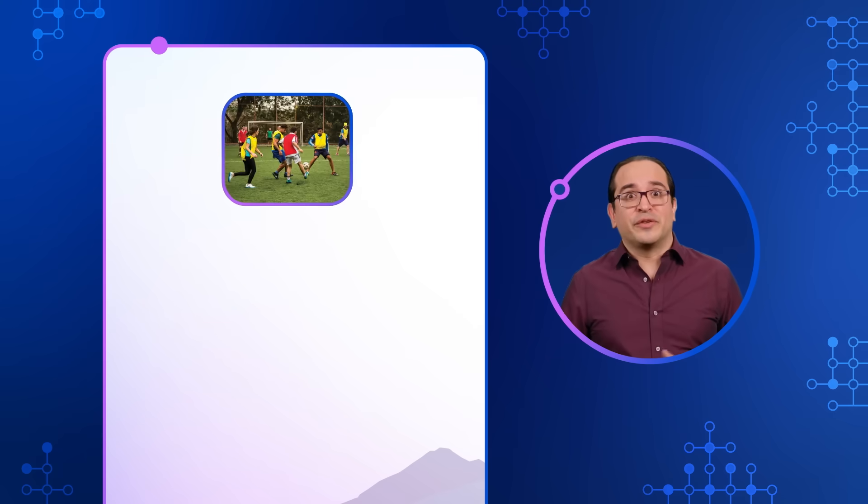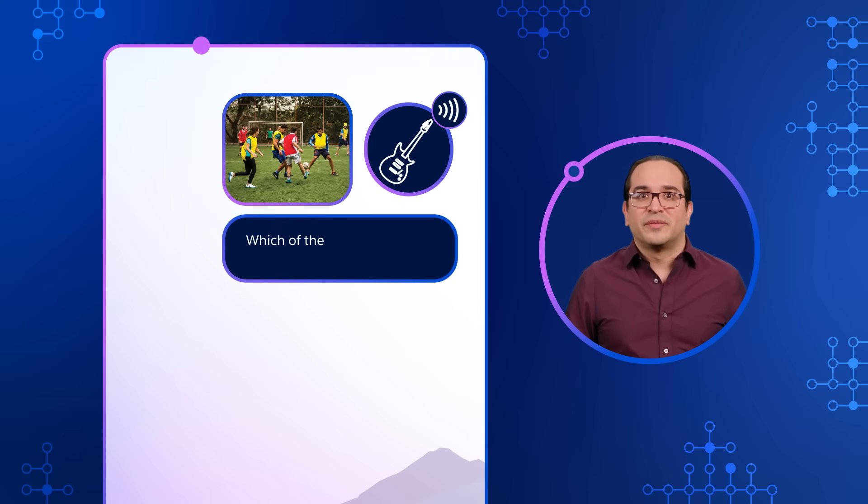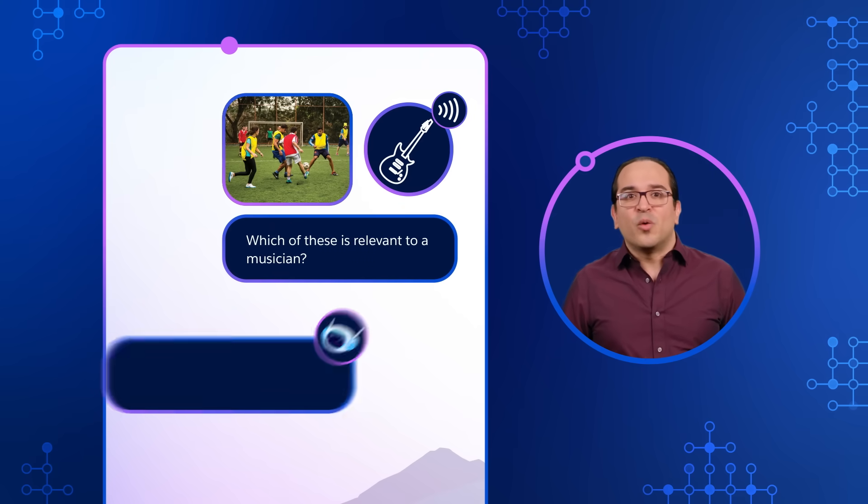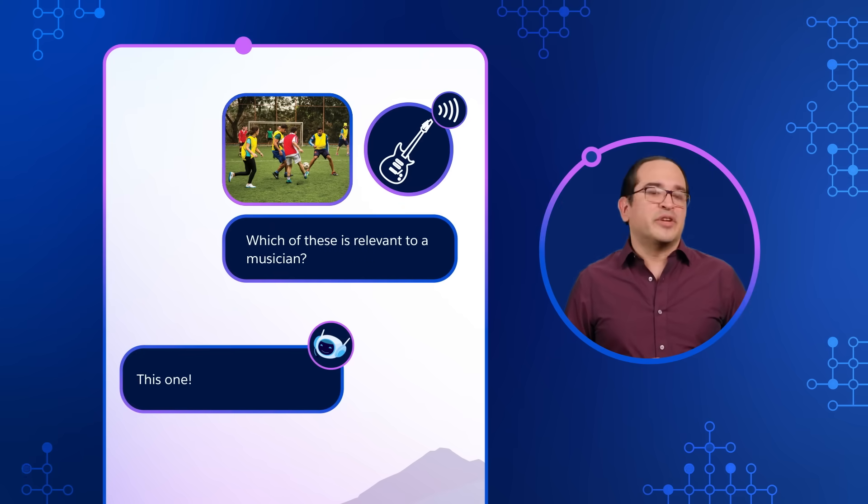Interestingly, after training, our research shows that this multi-modal AI system doesn't just understand each modality separately — it can also answer cross-modal questions. For example, given an image of a soccer field and a sound clip of a guitar, we can ask the AI system which input is relevant to a musician. This cross-modal reasoning is a key capability of multi-modal AI.